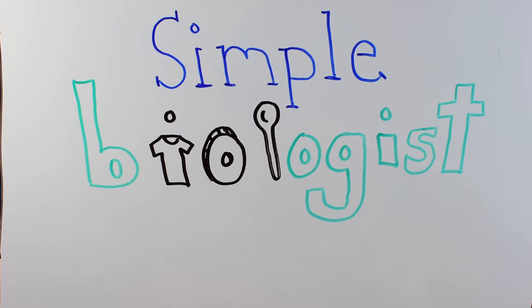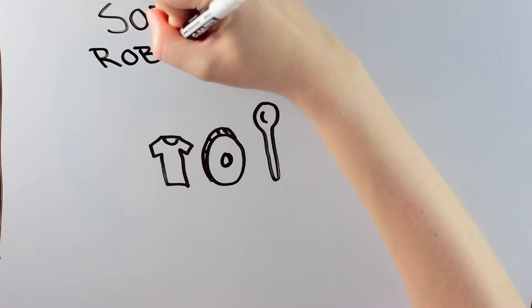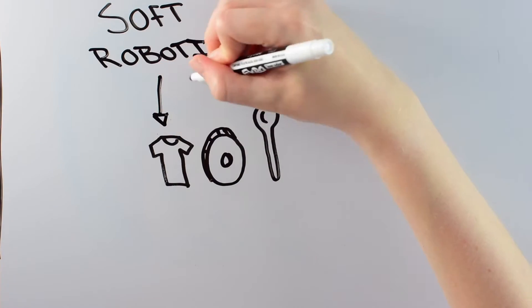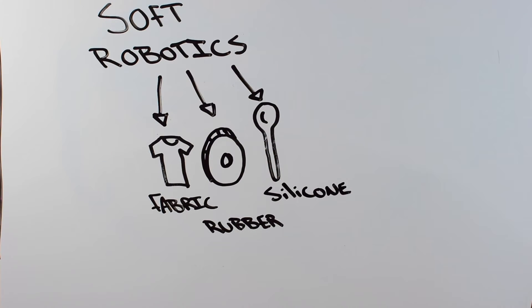Part of the reason the robot these researchers built is so special is that it's in two different fields. The first field is called soft robotics, meaning that the robot is made from soft materials like fabric, rubber, or silicone, rather than harder, more inflexible materials like metal or hard plastic.